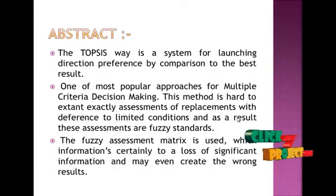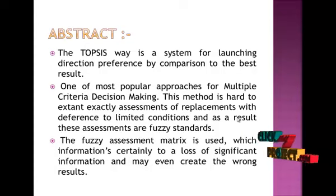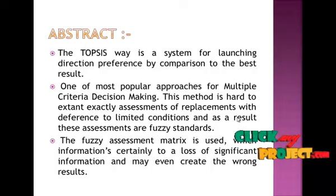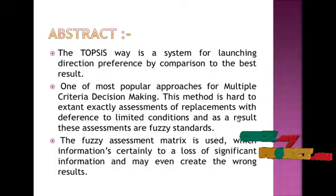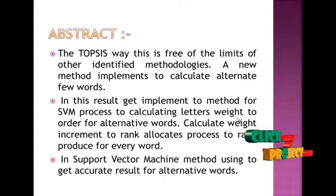In our proposed method, the SVM method is used to calculate and analyze the result. The fuzzy assumption matrix is used, but it causes loss of significant information and creates wrong results. Using our new method, we get the best result with no information loss. This is free of the limitations of other identification methods, as this is a new method implemented with alternate few words.